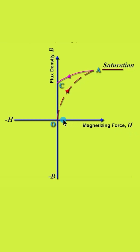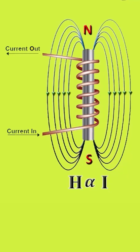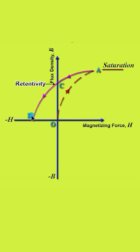We have reduced the magnetizing force to zero, but some magnetism still remains inside the core. In order to demagnetize the core and remove this residual magnetism, the magnetizing force is reversed further by reversing the direction of current in the coil. The curve then follows the path CD, and at point D the core becomes completely demagnetized. The magnetizing force required to remove the residual magnetism is called the coercive force or coercivity of the material, which is this much applied in the negative direction.